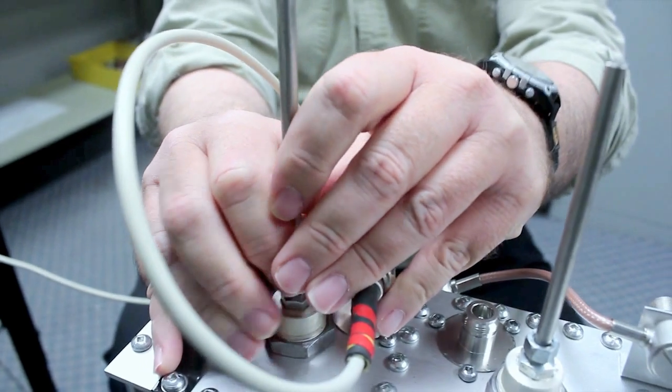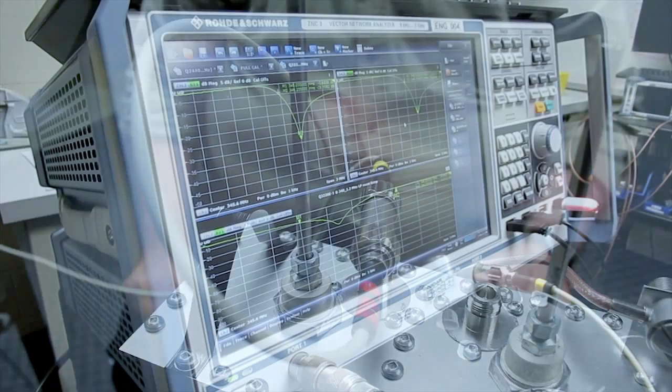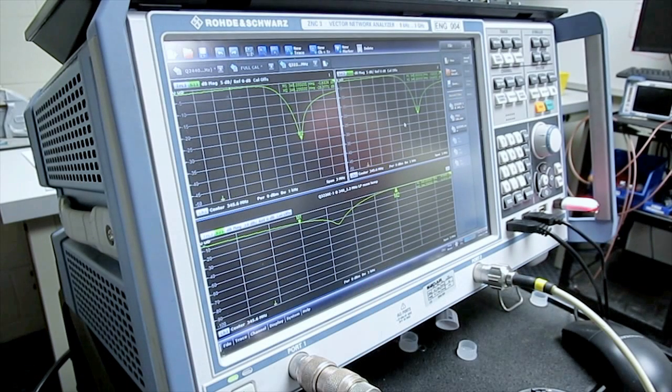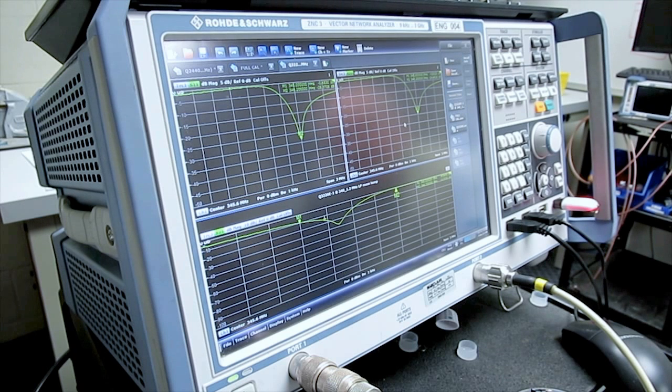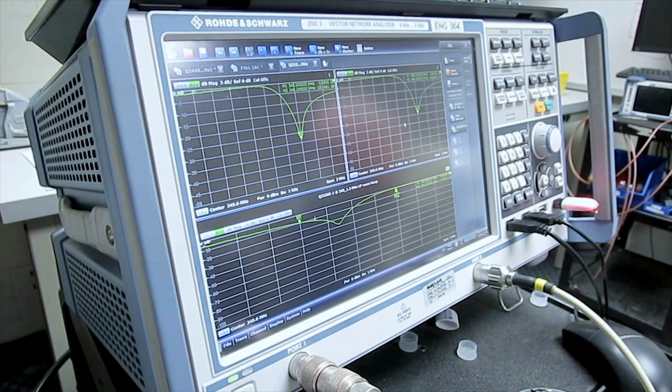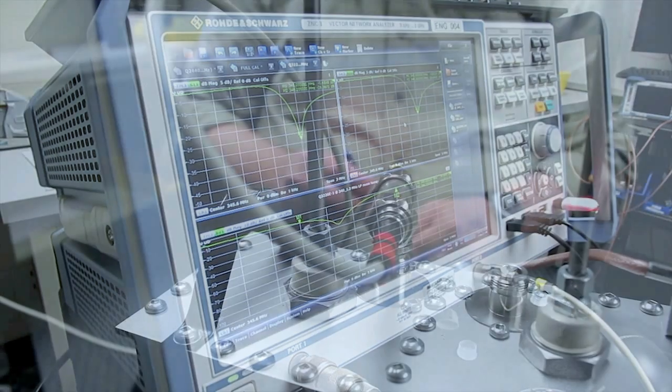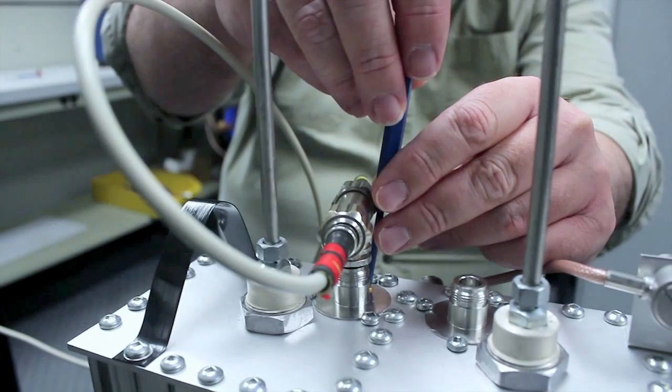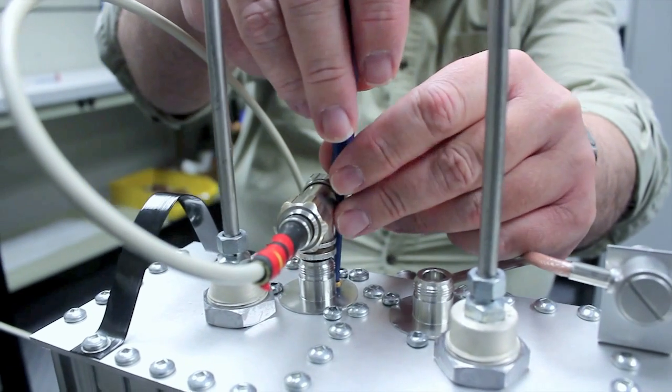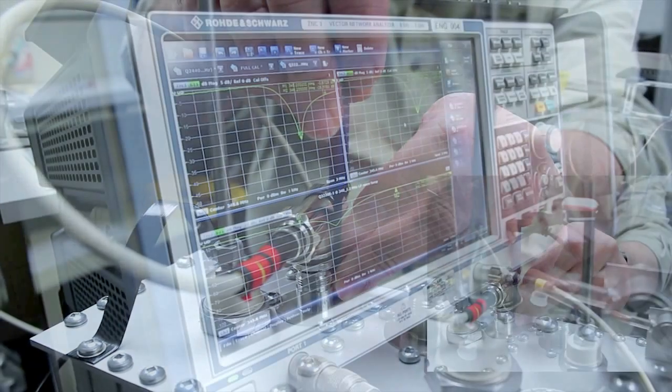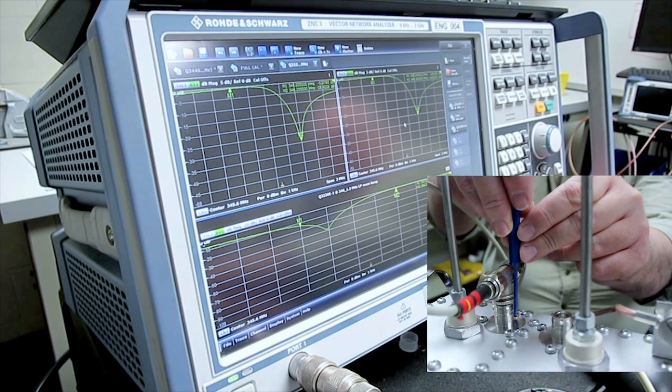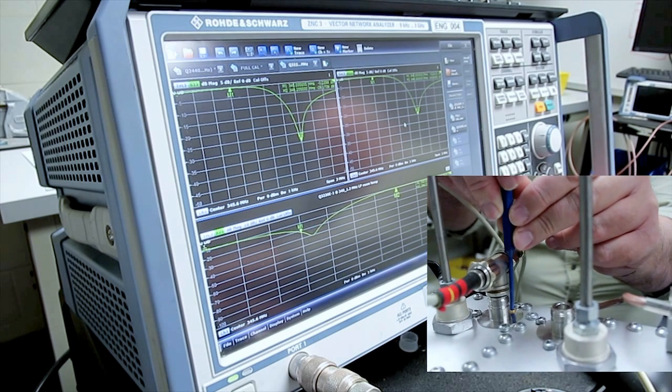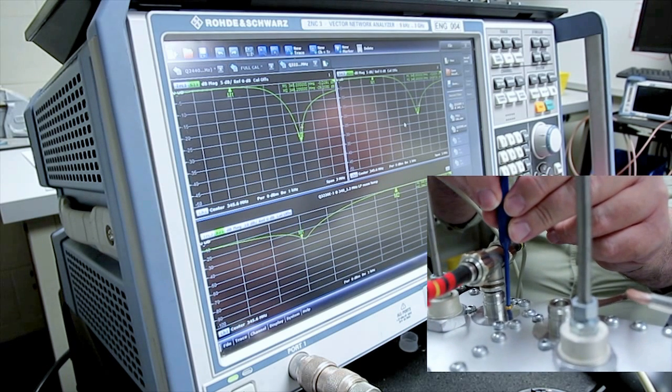On the network analyzer there, the top two curves are the return loss at the input and output ports of the T. The bottom curve is the insertion loss of the cavity, showing the notch. Now the notch is a little bit high, so we take our tuning tool, insert it into the slot in the capacitor, and we adjust until the notch is on the desired low frequency.